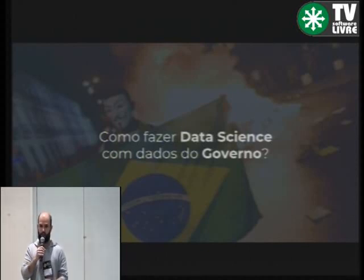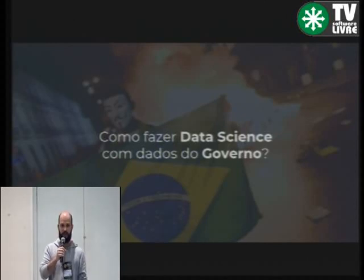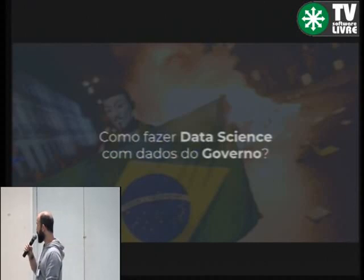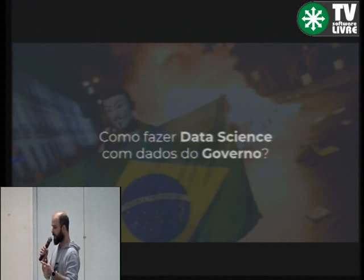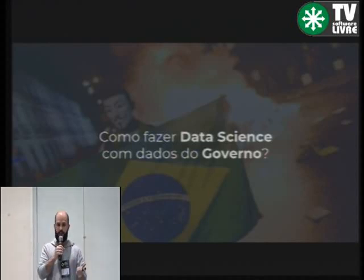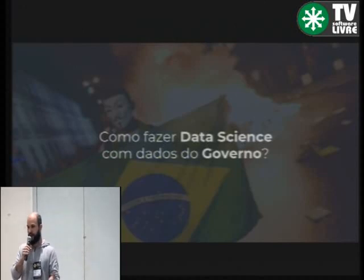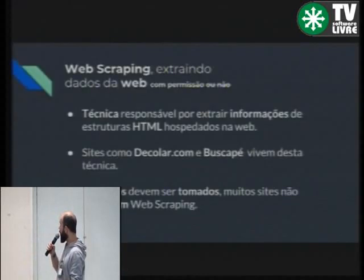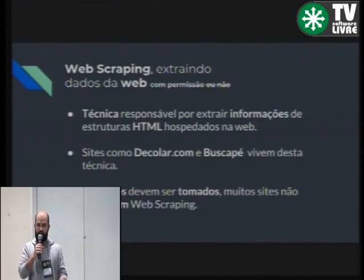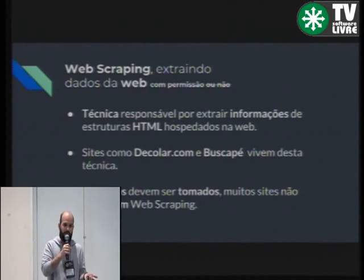Todos os dados do governo, por lei, têm que estar disponíveis para todo mundo. Mas na maioria das vezes eles só estão em páginas da internet — tu não consegue fazer download, tem que ficar paginando para ver o dado. Nos próximos slides, vou falar sobre uma técnica já bem antiga, mas que algum pessoal não conhece, que é o web scrapping. É uma técnica de se extrair dados da web, mesmo que o site não seja teu e mesmo que muitas vezes tu não tenha permissão — algo contraditório. Se o dado está na internet, tu tem permissão de pegar ele de certa forma.